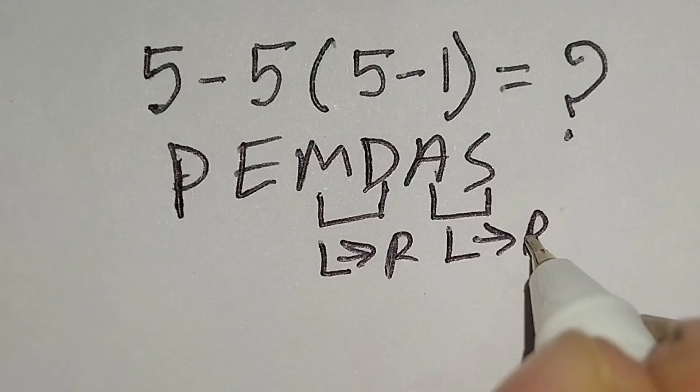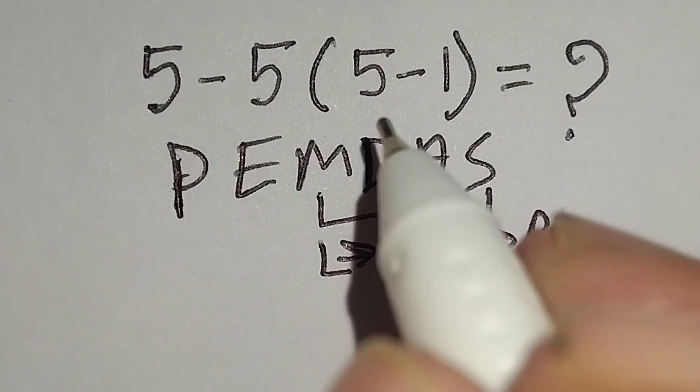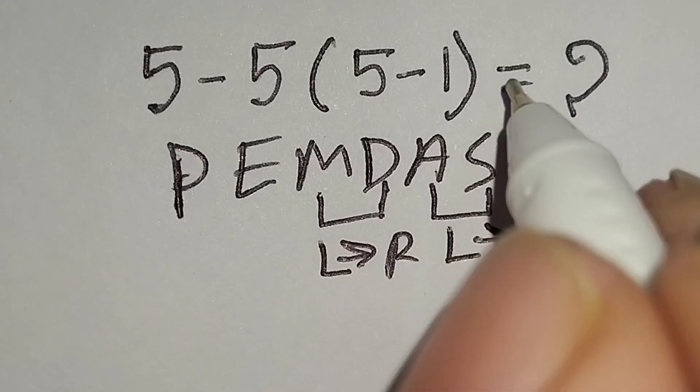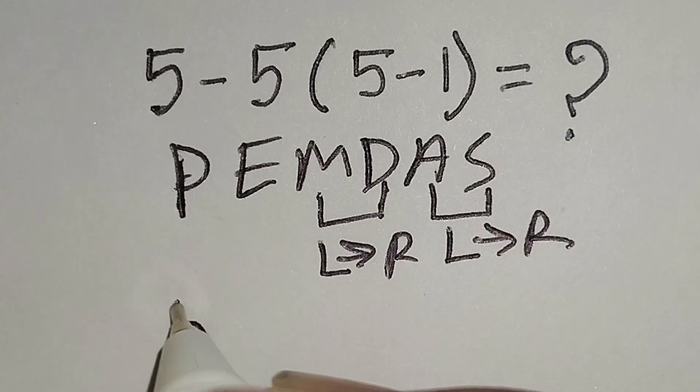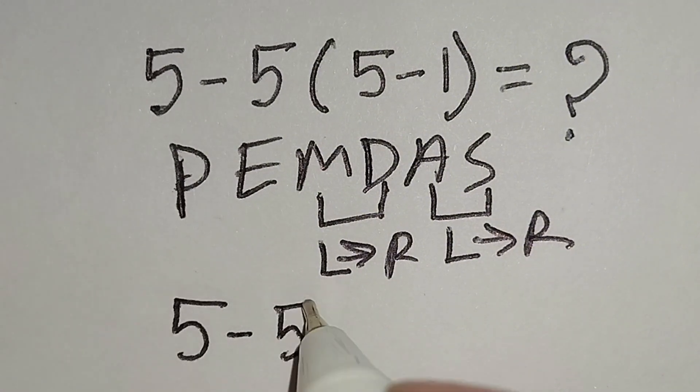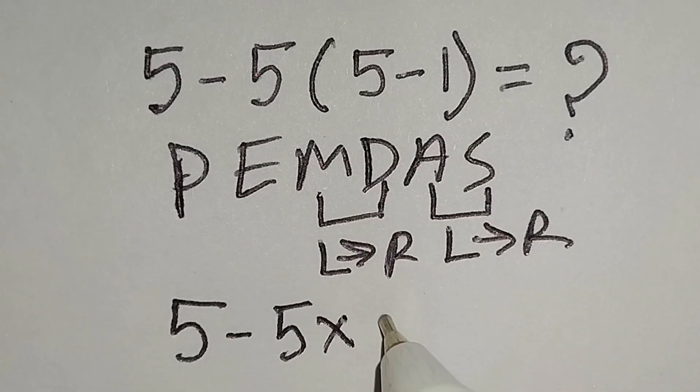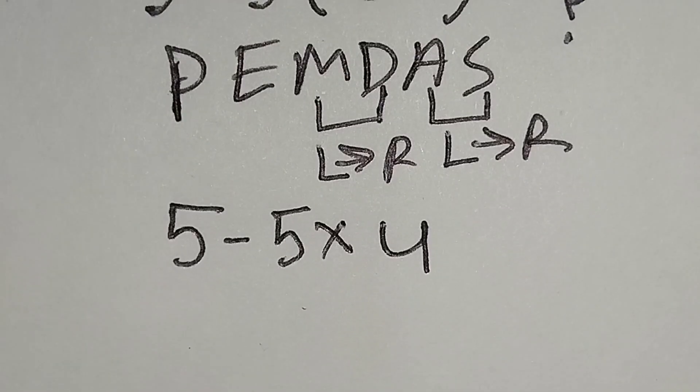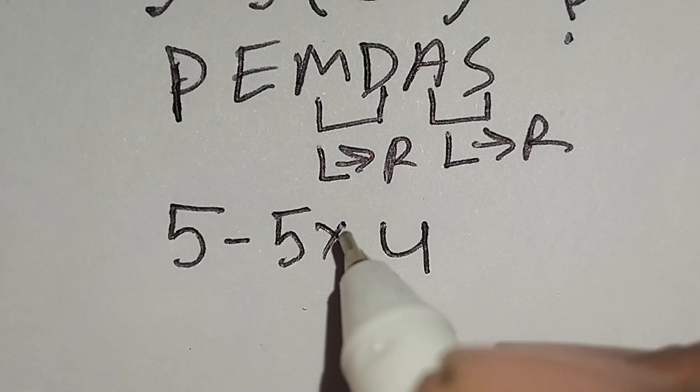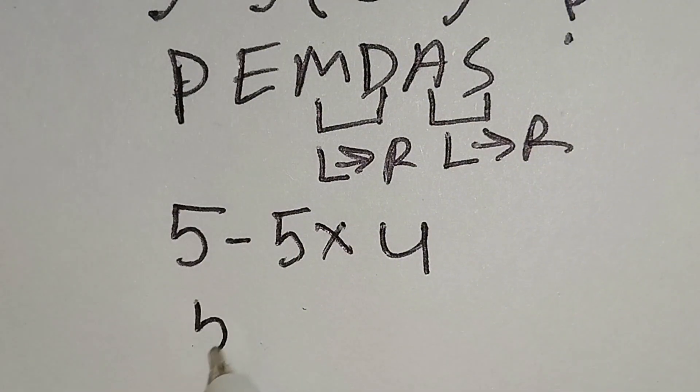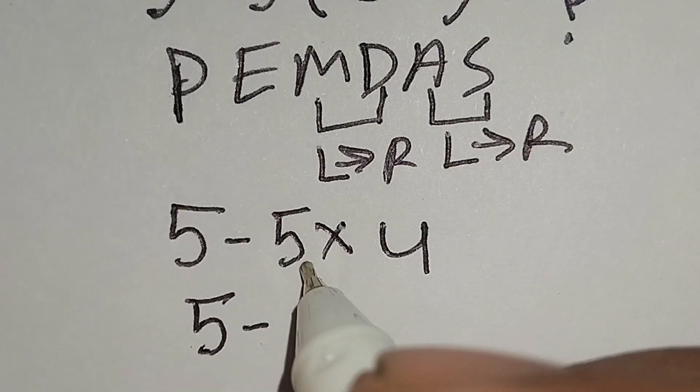Therefore, at first we have to work with this parenthesis here. This 5 minus 5 multiply 5 minus 1 gives us 4.